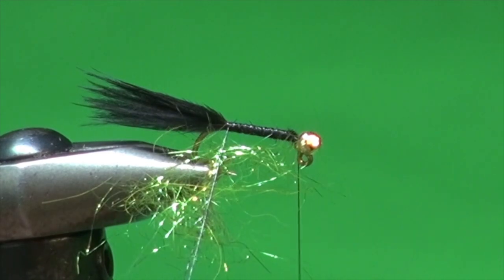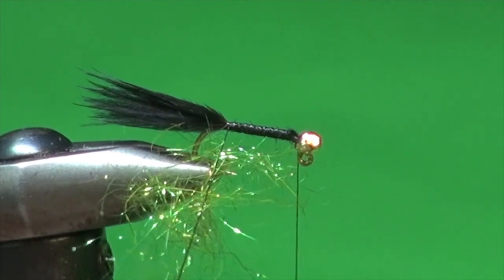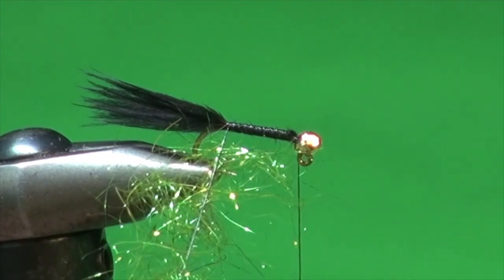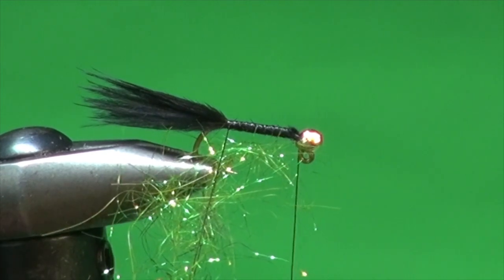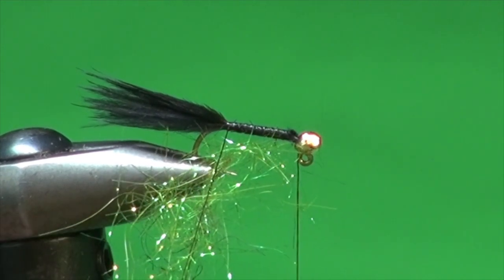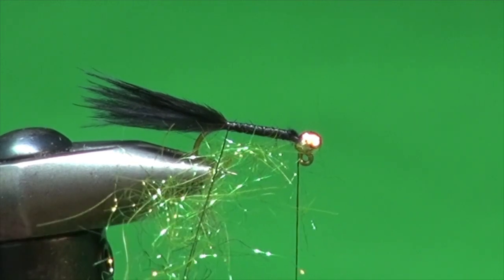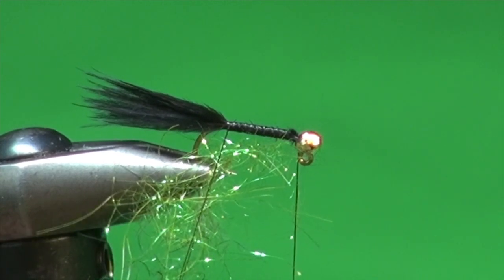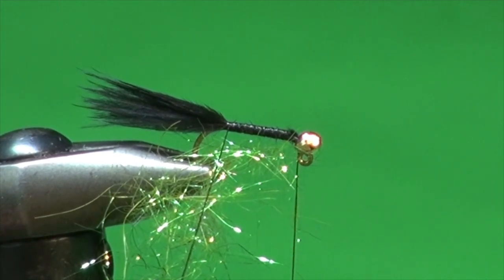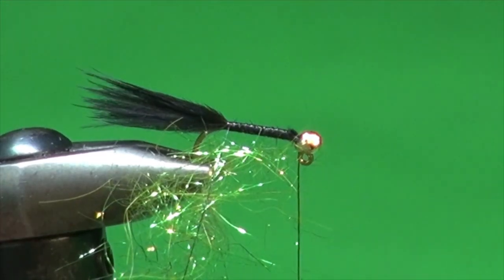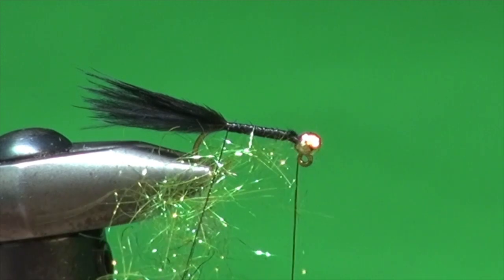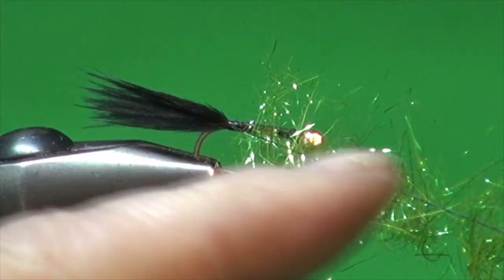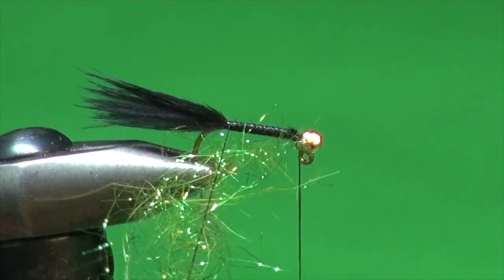So you want just a sparse pinch all the way up. Because we're going to brush this out so it breathes and flows and is translucent. It just really attracts fish. So don't overdub. You don't have to put the whole package. I'm sure the folks at Hairline would like it if you did. But you don't have to put the whole package into the dubbing loop. Sparse is best. Almost you can see through it. You see that clump there? You can see right through it. It's not that dense at all. And you're trying to get a dubbing loop that's, you know, I'll just pull it off to the side here. You can see it's pretty even all along the length here. There's no bare spots.